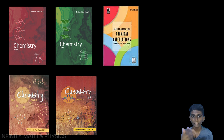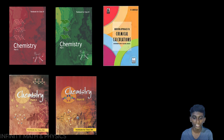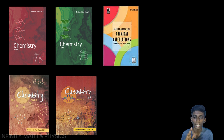Next is Modern Approach to Chemical Calculations by R.C. Mukherjee, and Organic Chemistry by O.P. Tandon. With these books, if you have already gone through NCERT textbooks, you can refer to these additional books. Also, Concise Inorganic Chemistry by J.D. Lee, Physical Chemistry by P.W. Atkins, and Organic Chemistry by Morrison and Boyd are further reference books you can study.